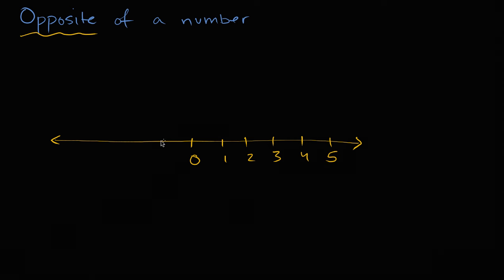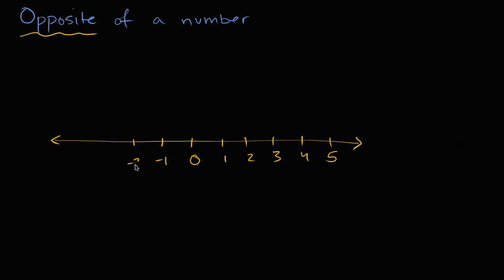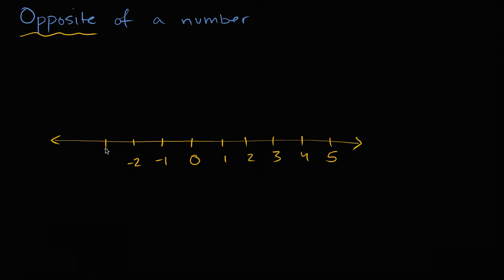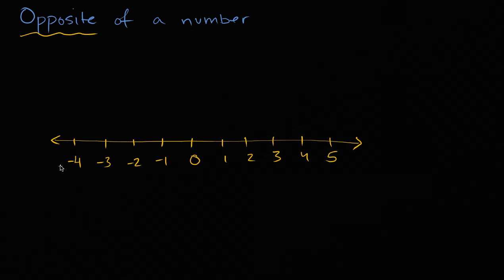As we go to the left, we get more and more negative. So negative one, negative two, negative three, negative four. And I could keep going on and on and on.